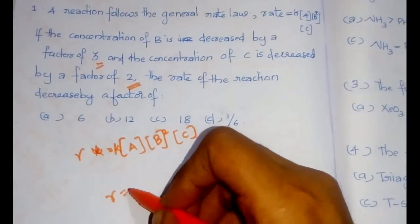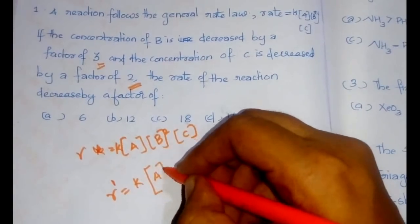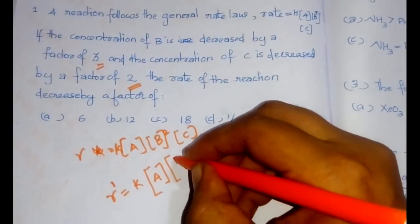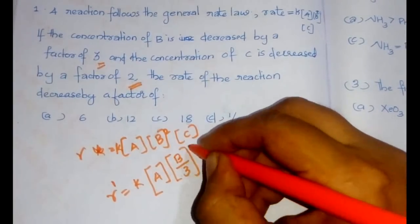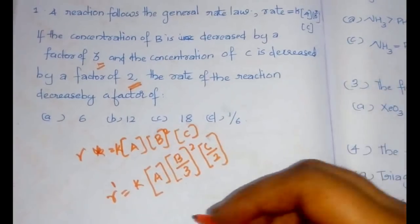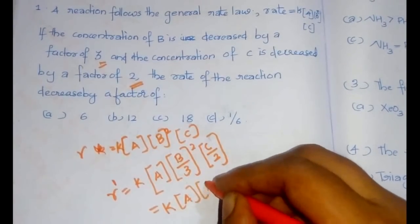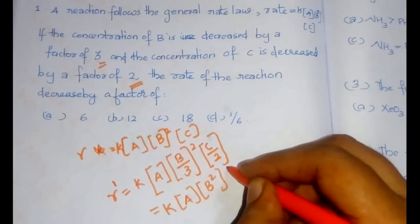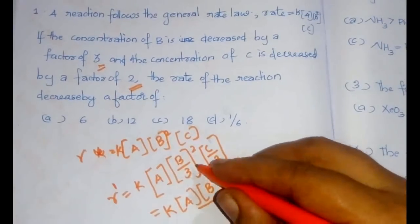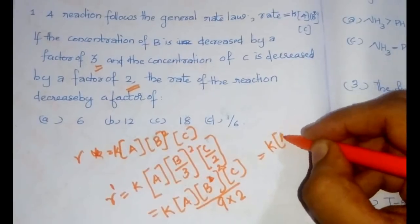Now the new rate R' would be equal to K × [A] × ([B]/3)² × [C]/2. We can simplify this further as K × [A] × [B]² × [C] divided by (3² × 2), which is divided by 9 × 2.